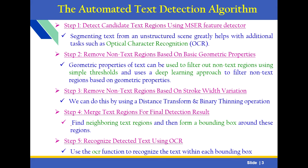Step 1: Detect candidate text regions using the MSER feature detector. Step 2: Remove non-text regions based on basic geometric properties. The geometric properties of text can be used to filter out non-text regions using simple thresholds, using a deep learning approach to filter non-text regions based on geometric properties.